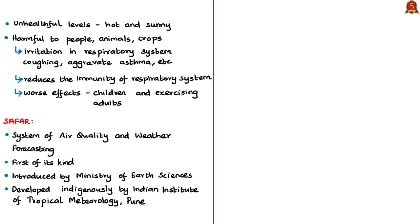Ozone concentrations reach unhealthful levels when weather is hot and sunny with little or no wind. High concentrations of ground-level ozone can be harmful to people, animals, crops and other materials. It can irritate the respiratory system, causing coughing, throat irritation and chest discomfort. Ozone can aggravate asthma, cause inflammation and damage cells lining the lungs, aggravate chronic lung diseases such as bronchitis, reduce the immune system's ability to fight bacterial infections, and may even cause permanent lung damage — effects worse in children and exercising adults.